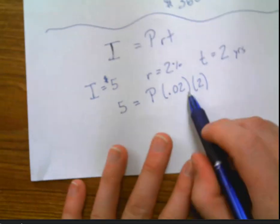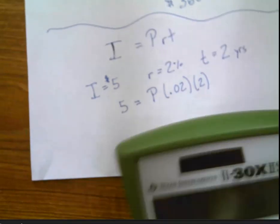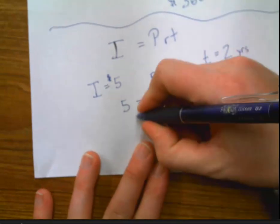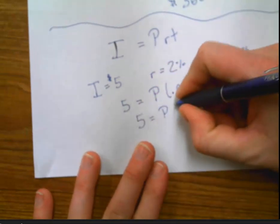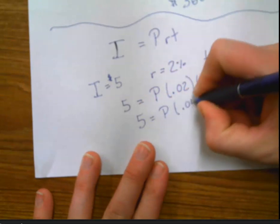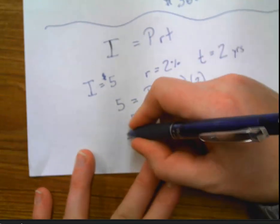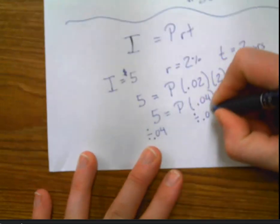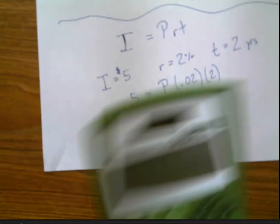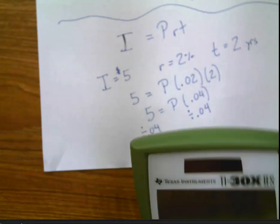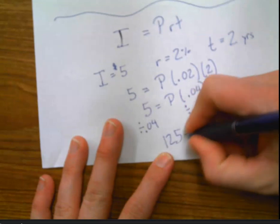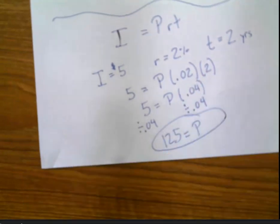Now, I'm going to go ahead and do .02 times two. .02 times two is .04. Five equals the principal times .04. Now, it's a one step. I divide this side by .04. I divide this side by .04. Five divided by .04 is $125 is my principal. And that's it.